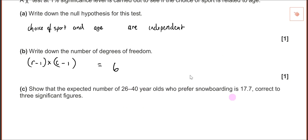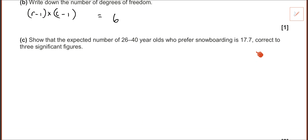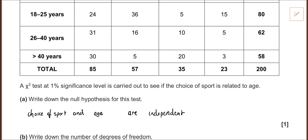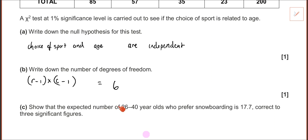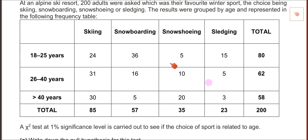The next part says 'show that' — this is where they get you. It's only one or two marks, but you can't just write the answer down because they've told you the answer is 17.7. You have to show it. The formula is: row total divided by grand total, multiplied by column total divided by grand total, times the grand total — or equivalently, row total times column total divided by grand total.